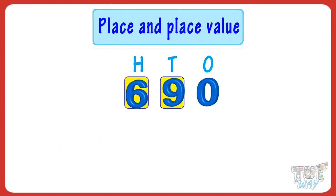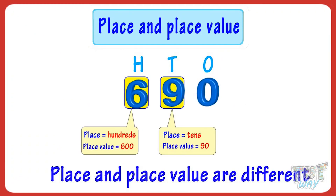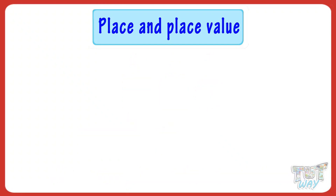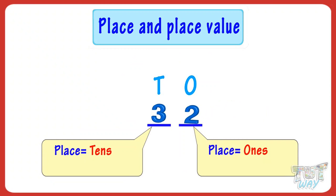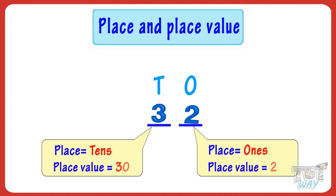So kids, if a digit comes more than once in a number, everywhere its place and place value will be different. So kids, what have we learned today? We have learned: place is the position of the digit in a number, and place value is how much the digit is worth.